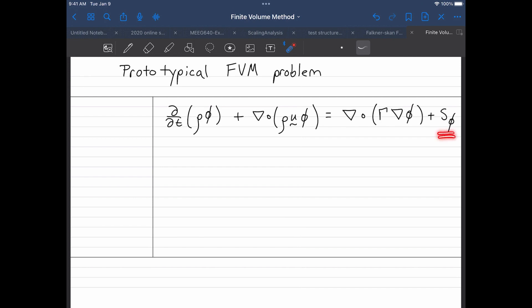For example, viscous dissipation depends on the velocities. And if the velocities is one of the unknowns you're solving for, that actually goes into what determines the dissipation. But anyway, so let's consider this standard form.